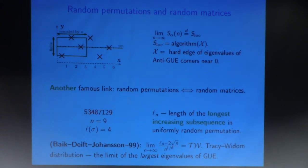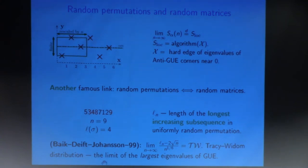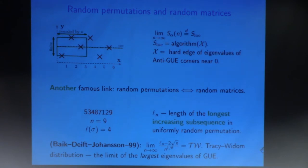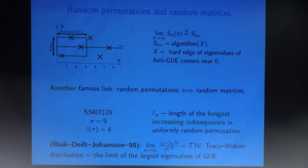Take a permutation uniformly at random, and you get a random variable which is the length of the longest increasing subsequence of your random permutation. The theorem that Baik, Deift, and Johansson proved is that for large n, you subtract twice the square root of n, normalize by n to the 1/6, and in the limit you get the Tracy-Widom distribution — the limit for the largest eigenvalues of the Gaussian unitary ensemble. That's another appearance of a random matrix object built out of permutations.